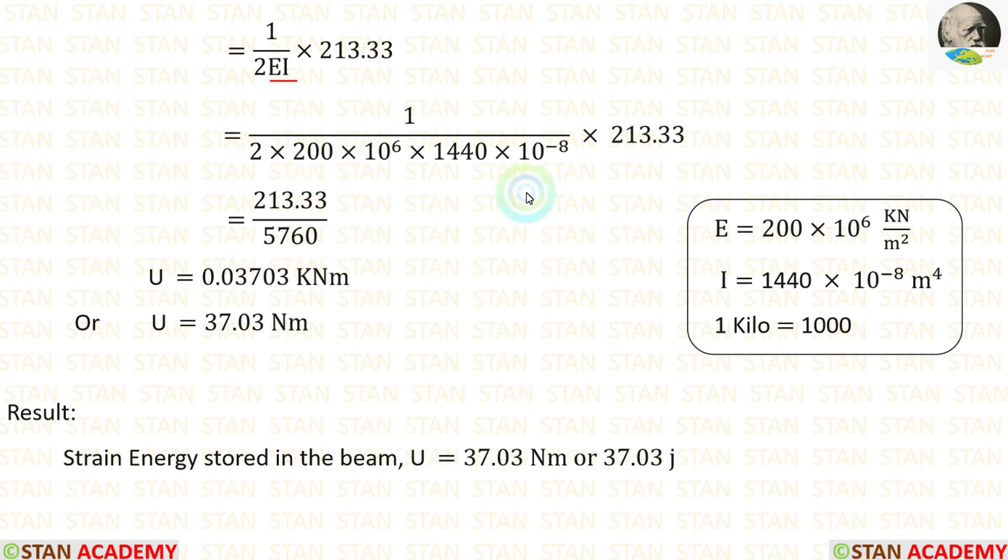Now, let us apply the values of e and i. The values of e and i are given in the question. We can apply them. Finally, we are getting u is equal to 0.03703 kNm. We know that 1 kN is equal to 1000. We can multiply with 1000 and we are getting in Nm. In the question, we have been asked to find out the strain energy. We have got it. It is equal to 37.03 Nm or 37.03 Joules, because 1 Nm is equal to 1 Joule.